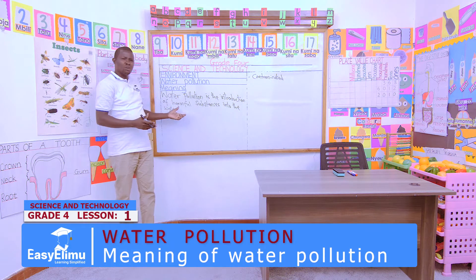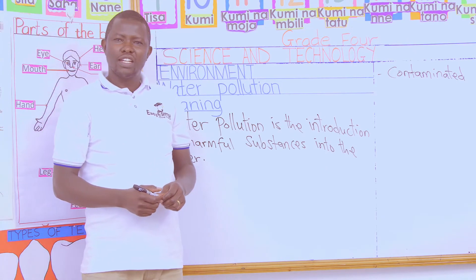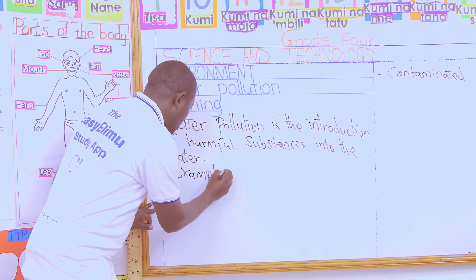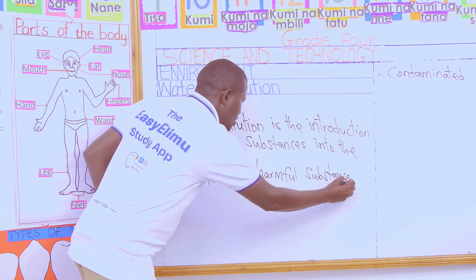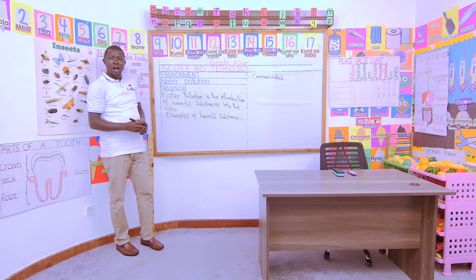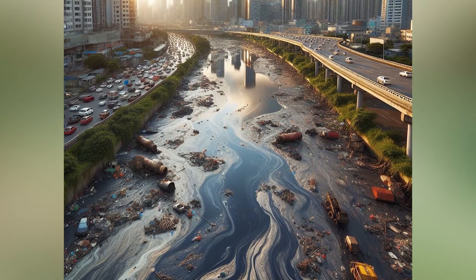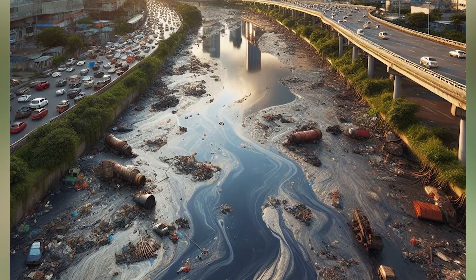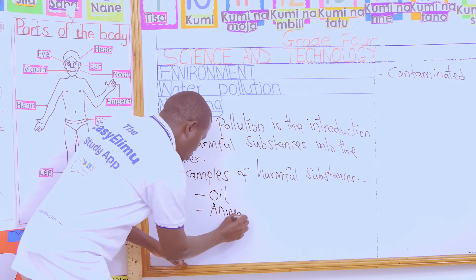Now, who can tell us some of these harmful substances which can be introduced to water? Examples of substances which can be introduced into water to contaminate it? Victoria, can you tell us examples of harmful substances? Animal wastes. Yes — animal wastes.